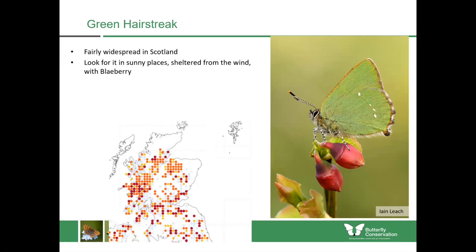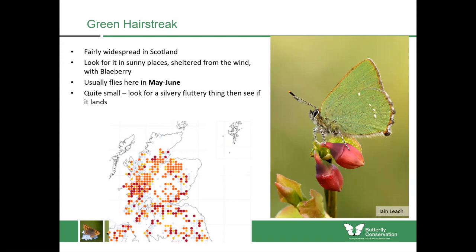The green hairstreak is a fairly widespread species in Scotland but never very numerous. Look for it in sunny, sheltered and warm places with blaeberry. It's usually flying from May until June. They're fairly small butterflies — you're looking for a silvery fluttering thing and, when it lands, you'll see the beautiful iridescent green appearance.